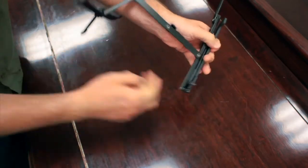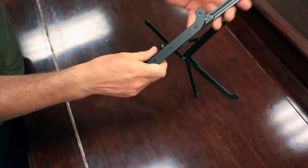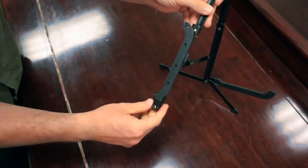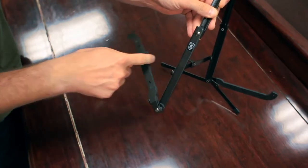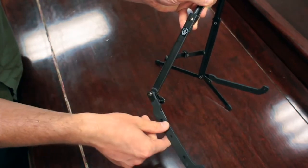Now we're going to turn the stand to the left side and do essentially the exact opposite. Start by taking these three sections counterclockwise until they stop.